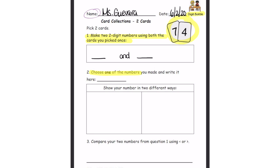Then you're going to choose one of the two numbers that you made and write it on the line. You're going to show that number in two different ways. You can use coins or tally marks. You can use base-ten blocks or anything else that's going to help you show me that number in two different ways.